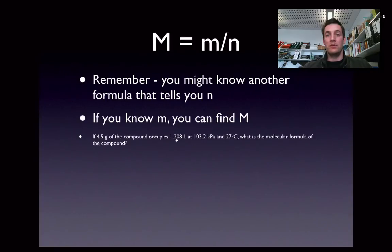We were told the volume there 1.208 litres and the pressure of 103.2 kilopascals, and we were told a temperature. Now we know that PV equals NRT, and that's a formula that we've got that includes all those things: pressure, volume and temperature. So this formula can be rearranged to say N equals PV over RT.